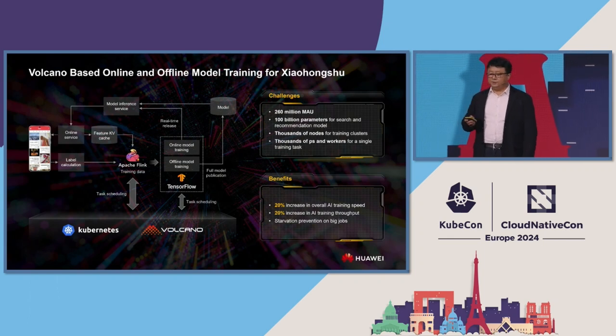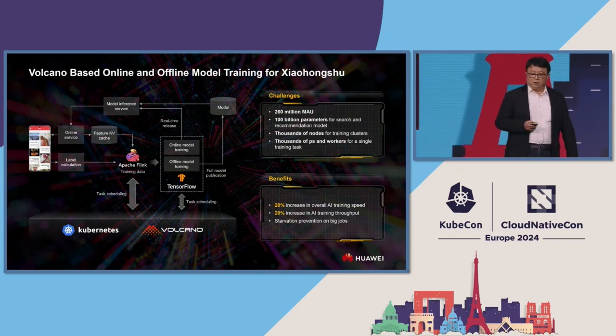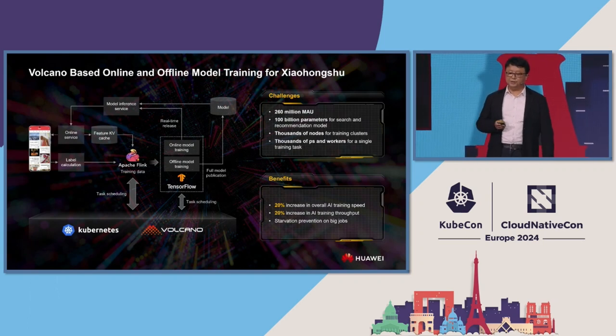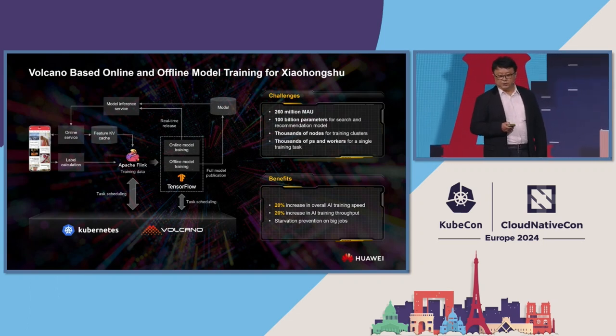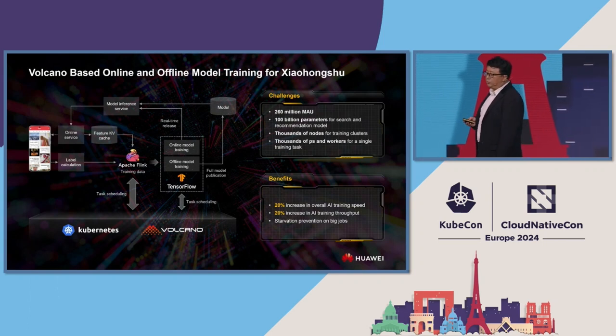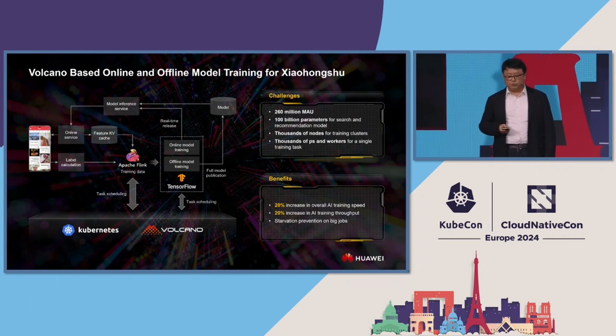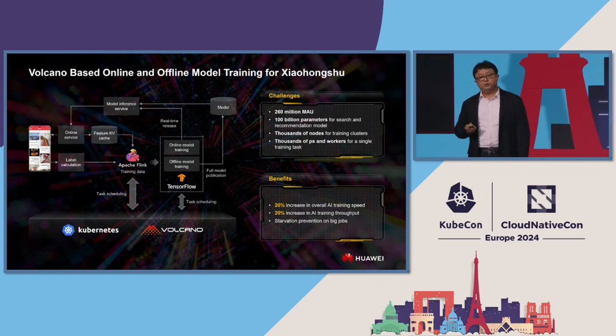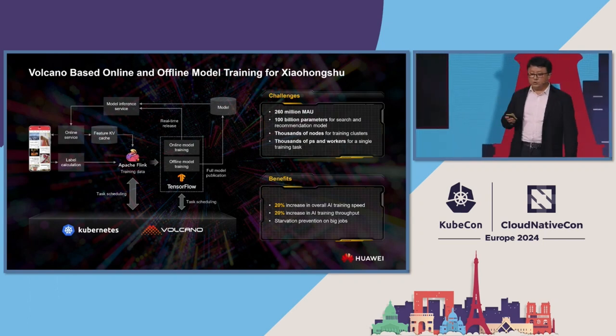Volcano is another CNCF open source project from Huawei Cloud to better support AI and machine learning workloads running on Kubernetes with job management and advanced scheduling policy enhancements. Xiaohongshu, a top content-sharing community in China with over 100 million monthly active users, has a recommendation model with nearly 100 billion parameters requiring hundreds of parameter servers and workers per training job. With Volcano, algorithms such as topology-aware scheduling, bin packing, and SRA-aware scheduling improved overall training performance by 20% and greatly reduced operational complexities.